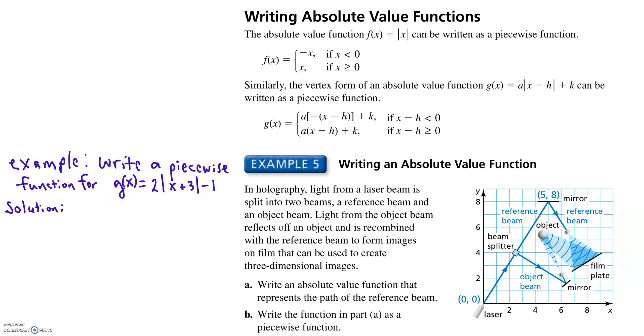Alright, last page of our notes. We're going to look at the absolute value function and write it as a piecewise function. As a piecewise function, it looks like this. Let's talk a little bit about why that is.